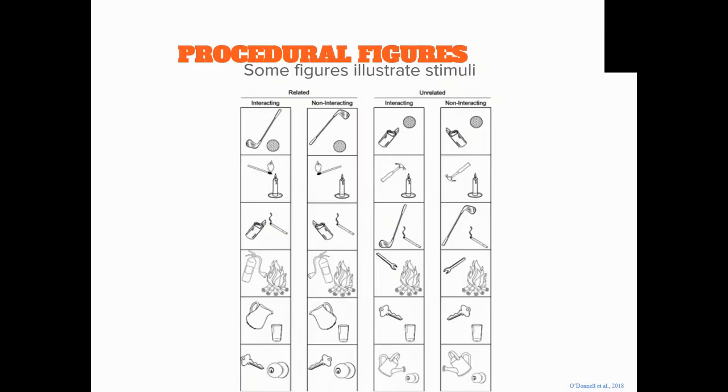You've got related pairs and unrelated pairs. Fire extinguisher and a fire makes sense, they go together. Like a key and a glass, not super intuitive, you don't think those things go together. And then your interacting objects have your golf club and your golf ball, it looks like it's going to hit it, or it's just in the picture sitting there, two separate objects.